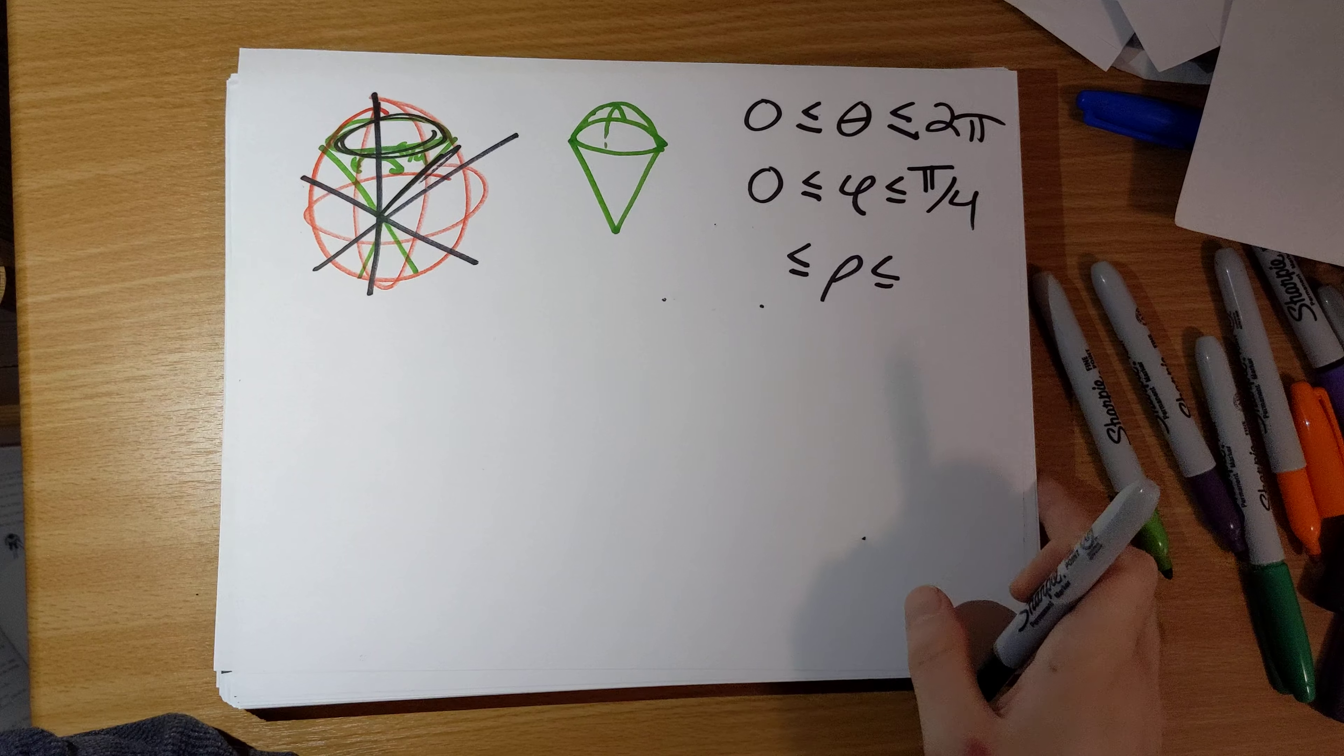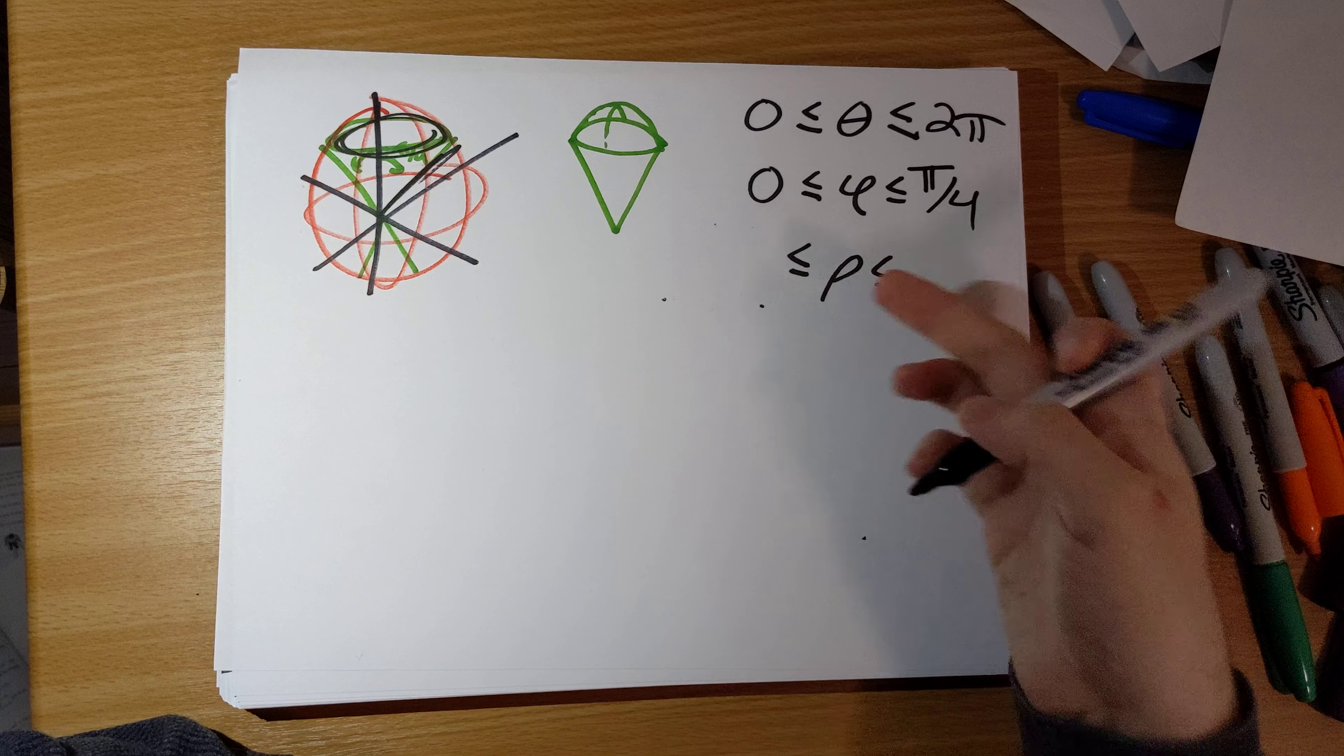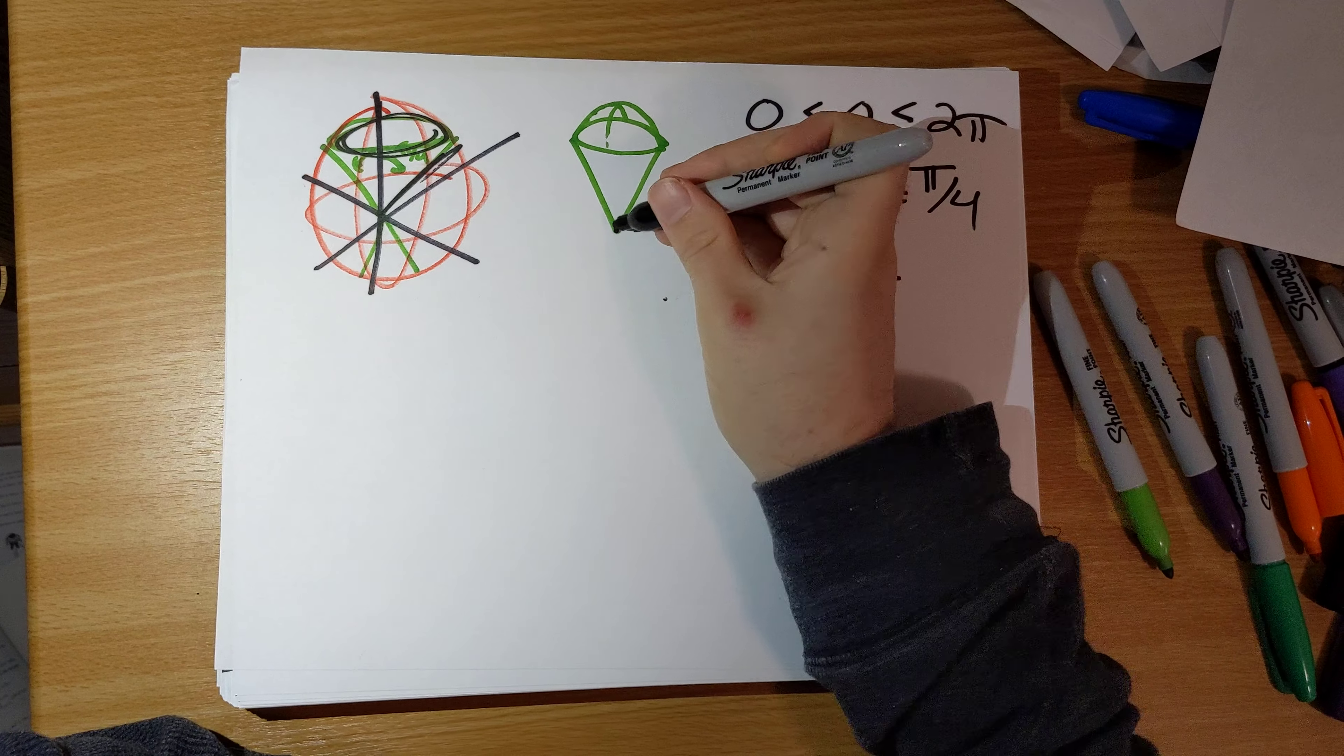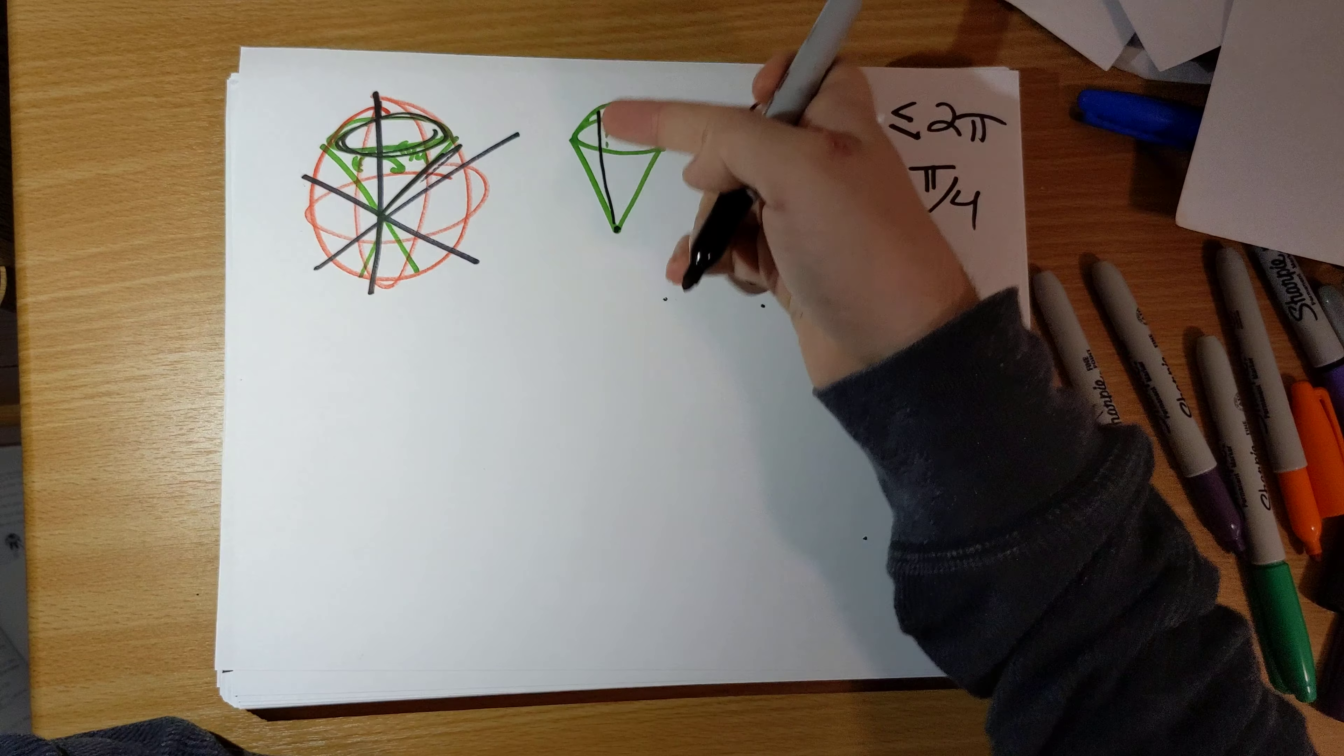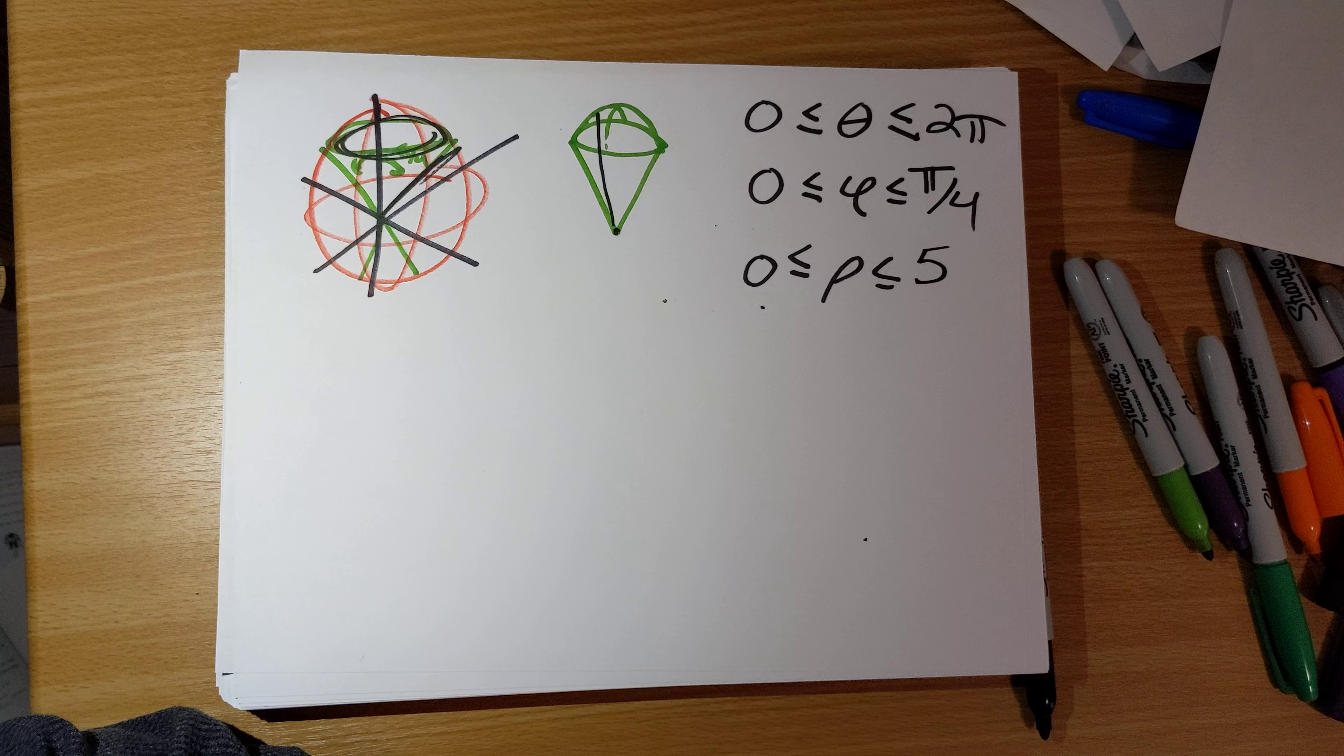Now for fixed value of theta and phi here, rho can be anything from 0. Rho can be anything from 0. We're starting at the origin here, all the way up until we hit the surface of the scoop of the ice cream cone, so that rho equals 5.